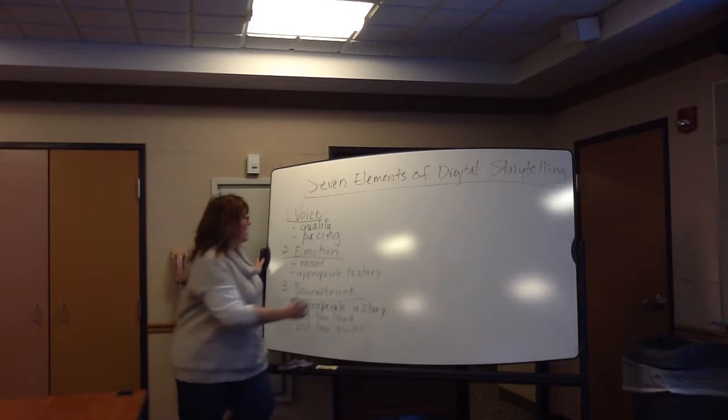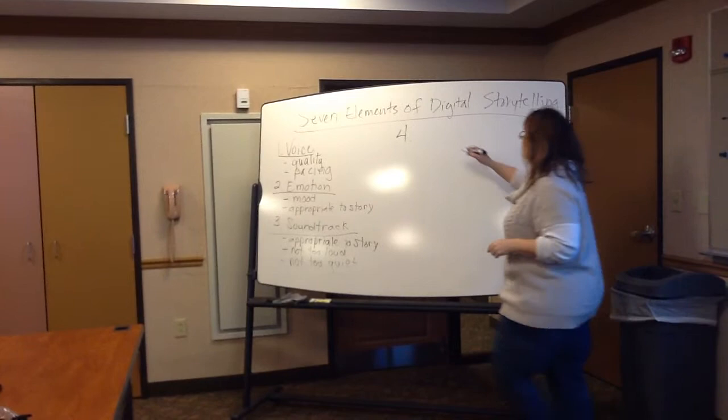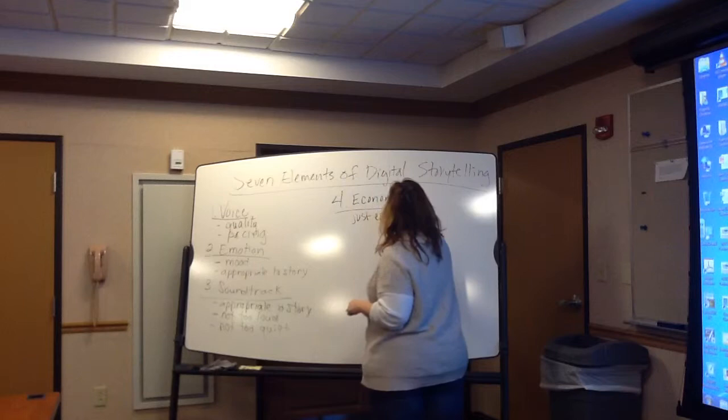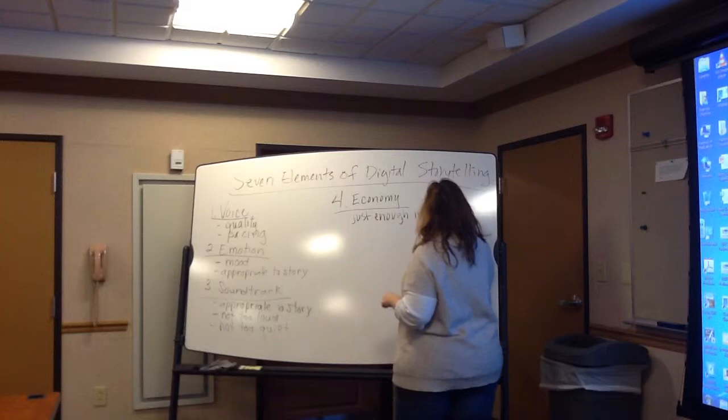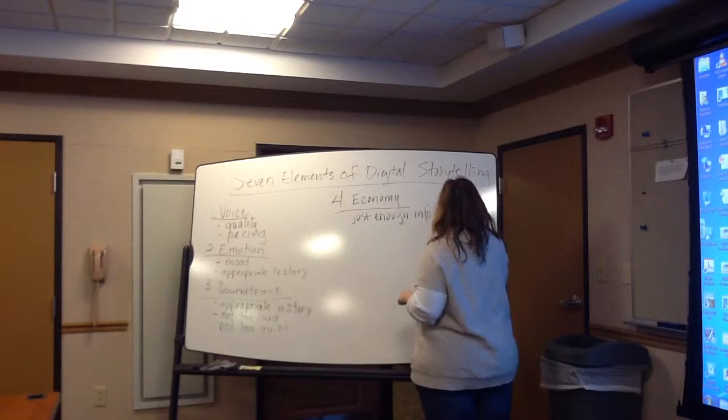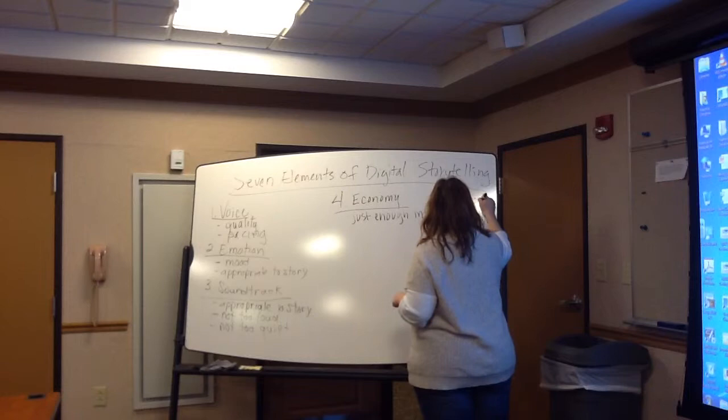How about four? Economy. And what do we mean by economy? Not using too many pictures — using just enough information and pictures to convey the idea you're trying to get across. So just enough info, including pictures, videos, etc. You don't want to overwhelm people with information, right? Just in general, from the script.